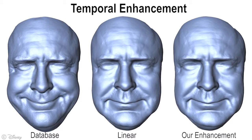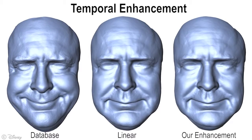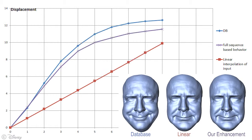Here we show an example of data-driven temporal enhancement for a smile sequence in slow motion. Linear interpolation of two keyframes, shown in the center, doesn't capture the correct dynamics of this actor. The closest matching database sequence is shown on the left, which of course does contain the correct dynamics — the smile starts fast and ends slowly. On the right, we show the enhanced result. Notice that we maintain the user's artistic intent of producing only a half smile, but the dynamics now match the database. We illustrate the result further by plotting the displacement of a single vertex at the corner of the mouth. The temporally enhanced result comes as close as possible to the database dynamics while retaining the spatial constraints of the input sequence.